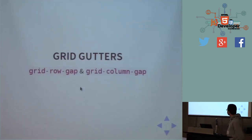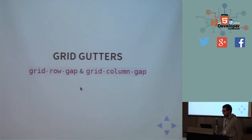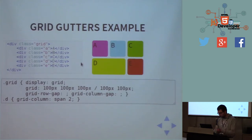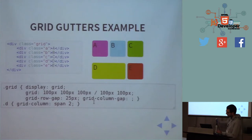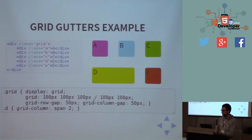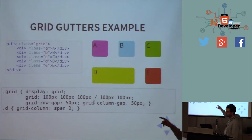About gutters — this was added to the spec in June because several people asked for it. We now have two new properties: `grid-row-gap` and `grid-column-gap`, which set the size of the gaps between tracks. For example, setting 50px adds 50-pixel gaps between rows, and similarly for columns. If an item spans two columns, it also takes the gap space, because it's part of the area.